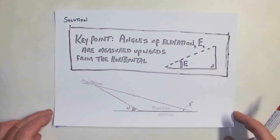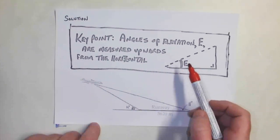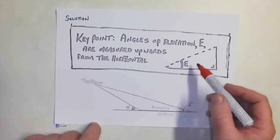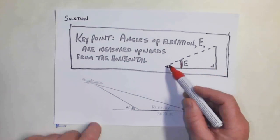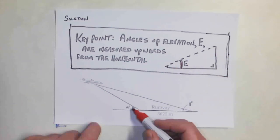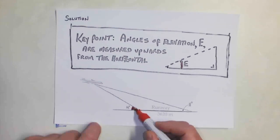A key point is the angle of elevation is the angle that's measured upwards from the horizontal. If you're standing here looking up, that's why this one here, at the near end, is 14 degrees.